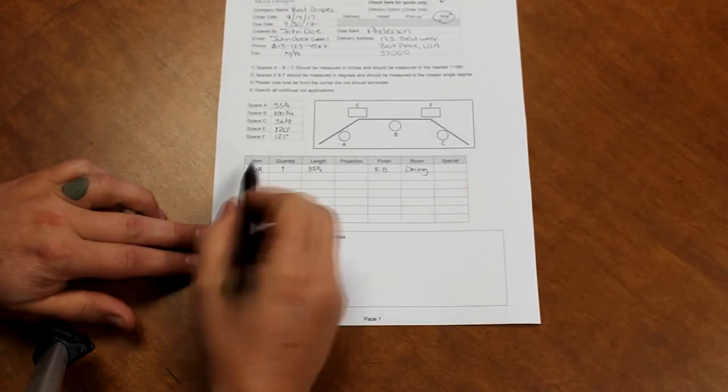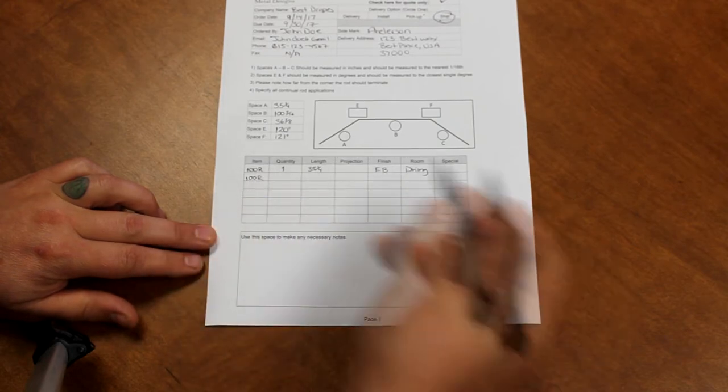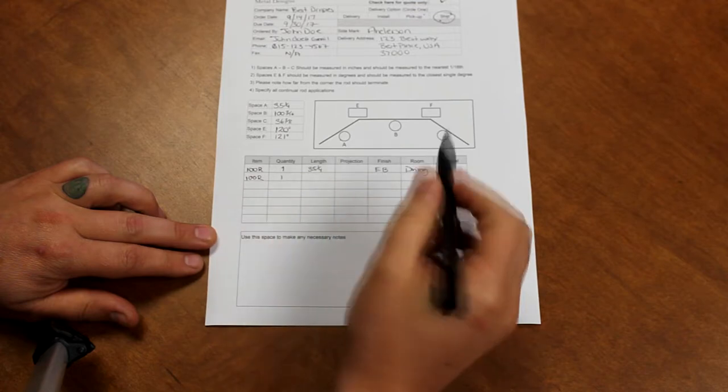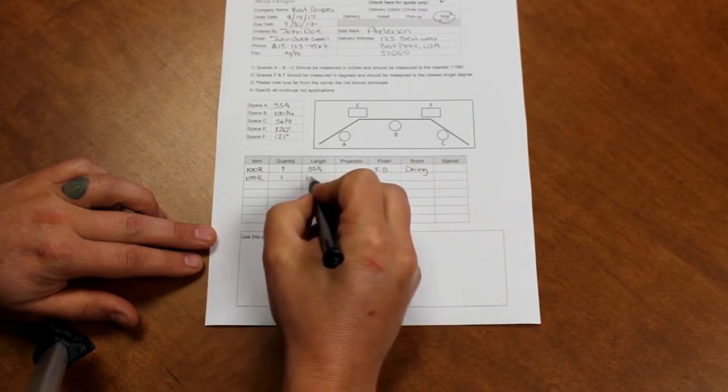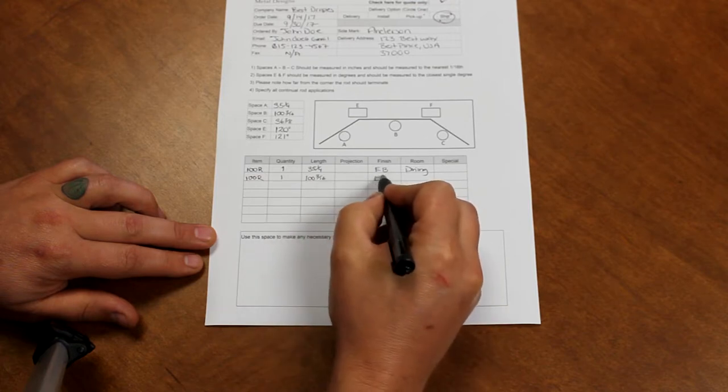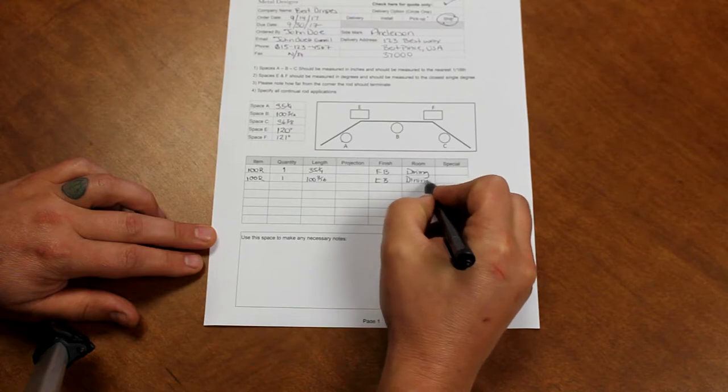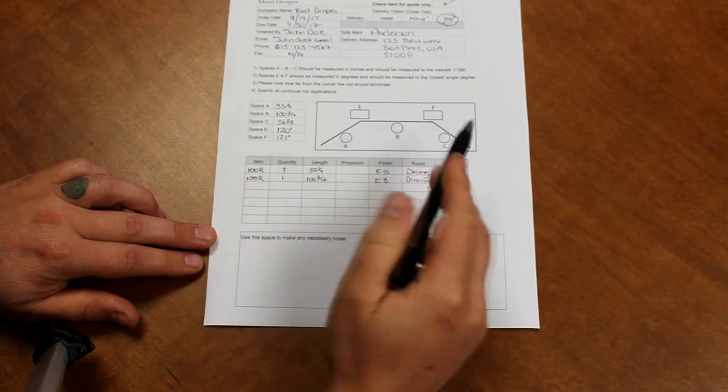That item is 100R. Again quantity is 1. Length is 100 and 3/16ths. Projection is not necessary. Finish is English brown and the dining room. And then from there we will go to space C.